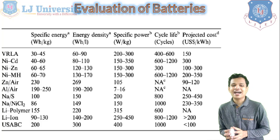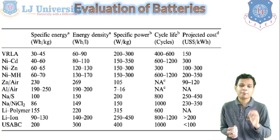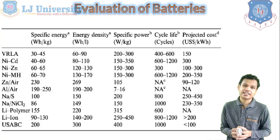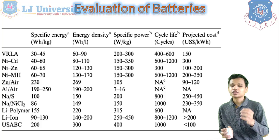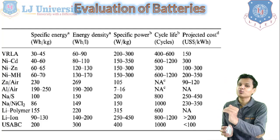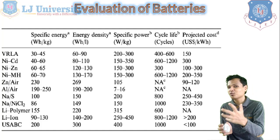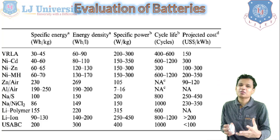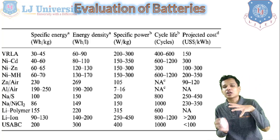Just look at the lithium-ion battery. The specific energy is comparatively good compared to the air battery, which has very lower cost but has the disadvantage of mechanical charging. Lithium-ion has around 130 Wh/kg specific energy. Energy density is also good, that is 140 to 200. Specific power is also very good, that is 450. It gives a combination of energy as well as power compared to other batteries. The cycle life is around 800 to 1200, almost the maximum a battery can provide, and the projected cost is also comparatively within budget.